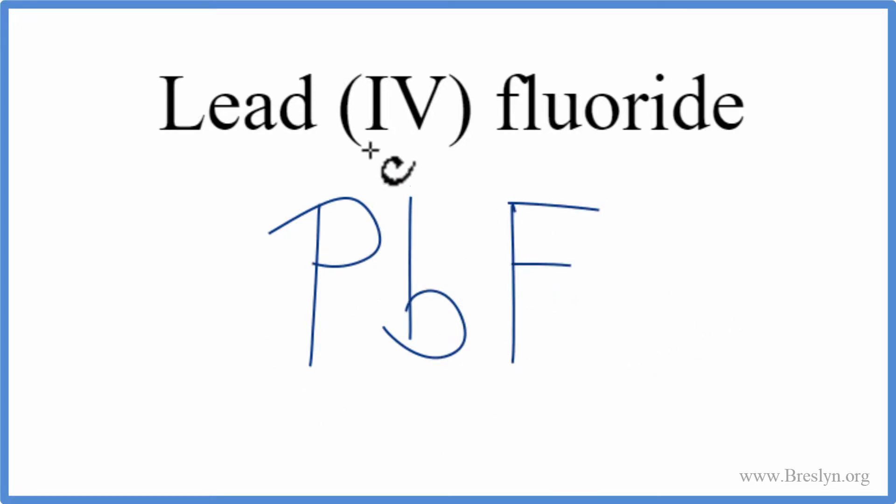So lead, that's a metal, it's a transition metal, because we have these Roman numerals here. Fluoride, or fluorine, this is a non-metal. So when you have a metal and a non-metal, you have an ionic compound.